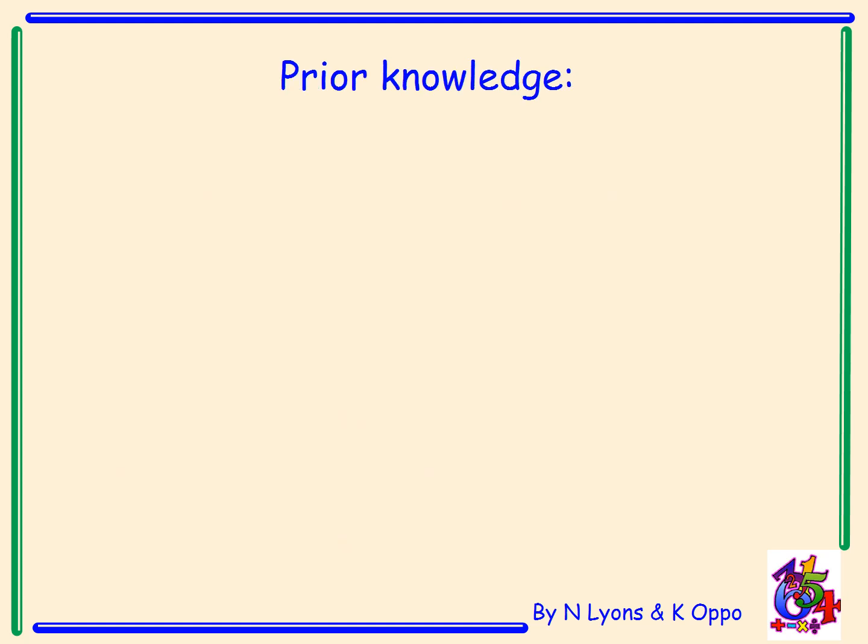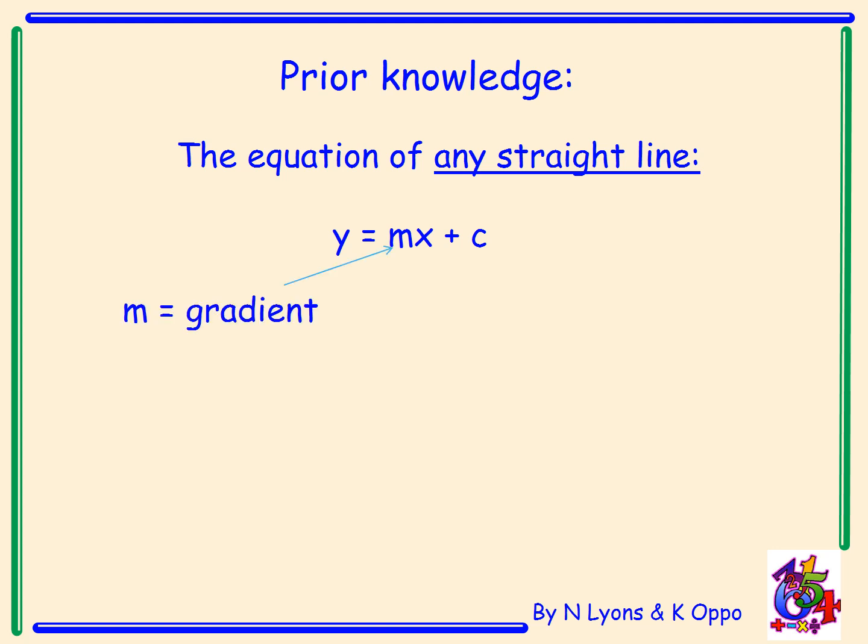Now our prior knowledge from National 5 is that you'll already know the equation of any straight line can be written in the form y equals mx plus c, where m is the gradient of the straight line and c is the y-intercept where it cuts the y-axis.